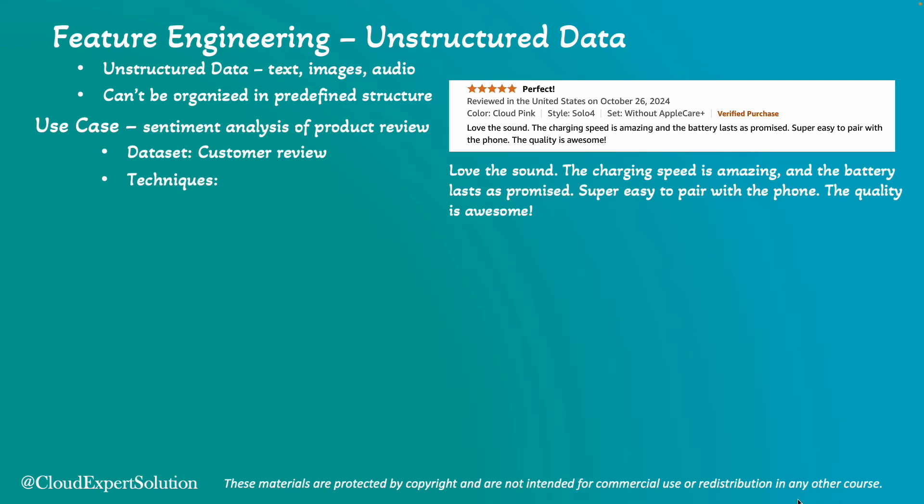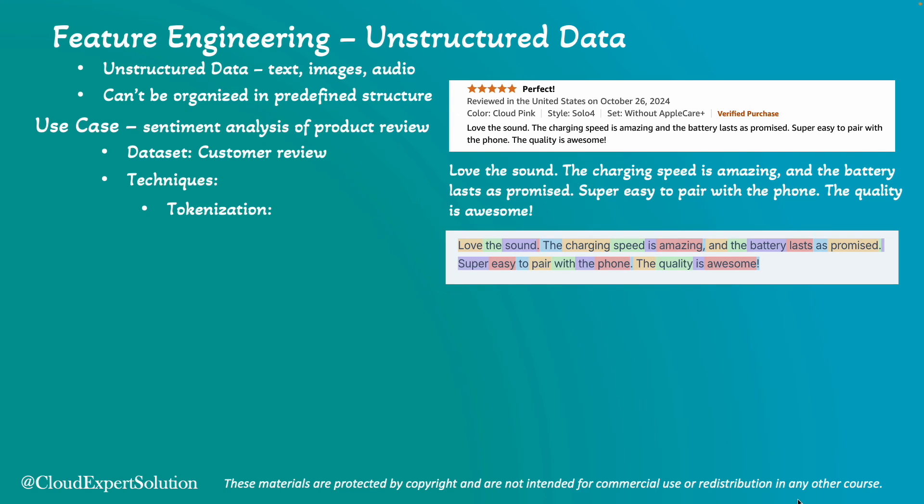The first step in feature engineering for unstructured text data is tokenization. Tokenization splits sentences into words or phrases. Here's the tokenization output of the review text. Each token is represented in a different color, and even punctuation marks like commas and periods are considered as tokens. In our input customer review text, words like love, the, and sound are now separate tokens.